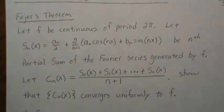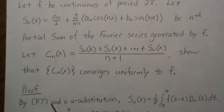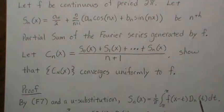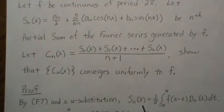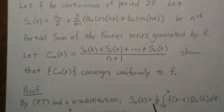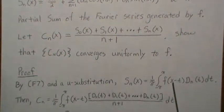Let's jump right in. The partial sum can be written in this form — that's from video F7 — and with a small u-substitution plugged in for one of the formulas, as I pointed out in video F7. So the partial sum can be written like this, which means if we look at Cn with this plugged in, we get this expression.